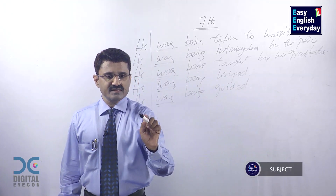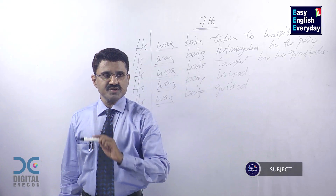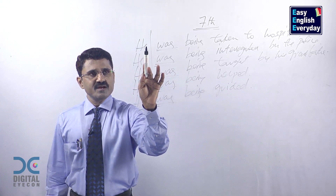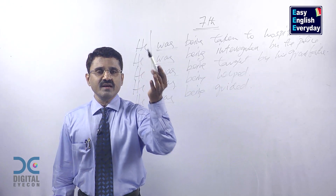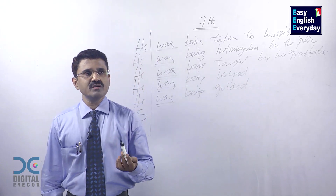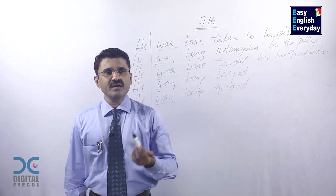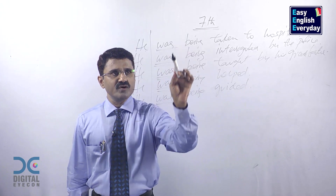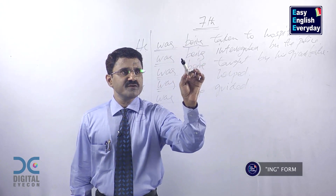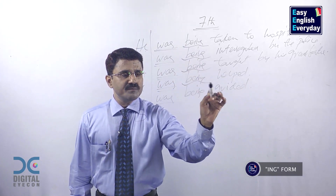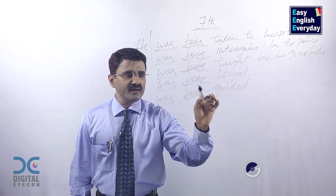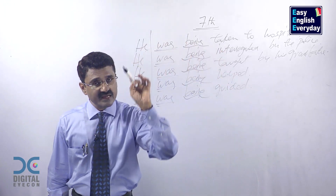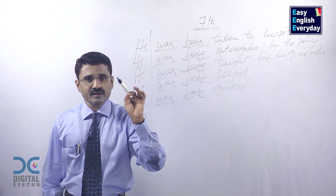This part of the sentence is called the subject. You are allowed to use he, she, it, or any singular name like John, Mary, car, chair, or book. The presence of 'being' indicates that all these actions were taking place continuously in the past.